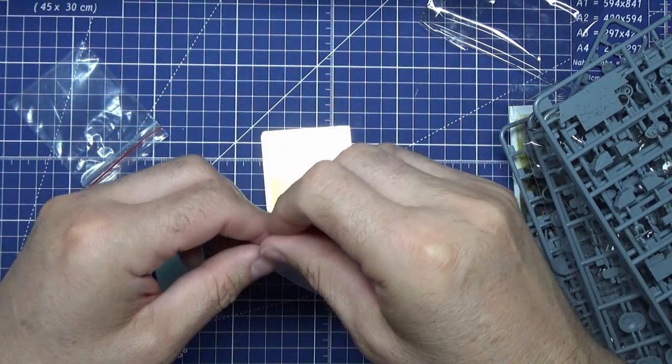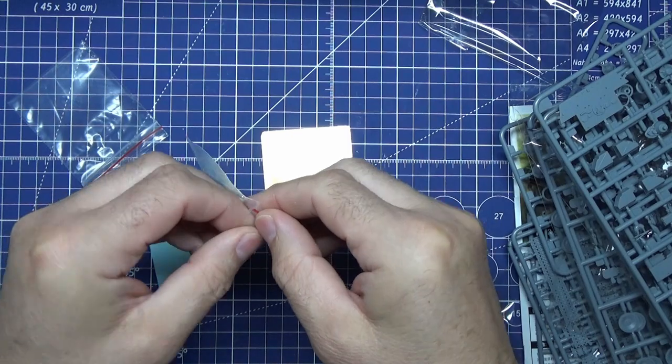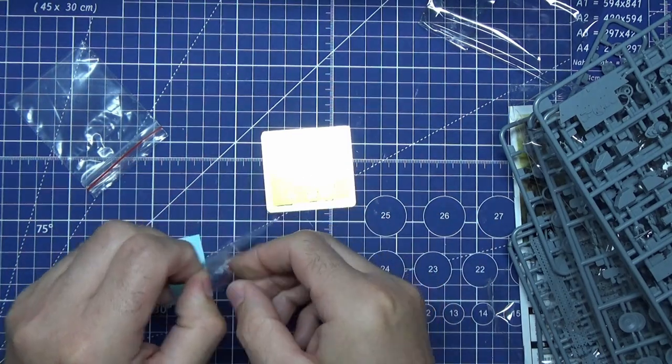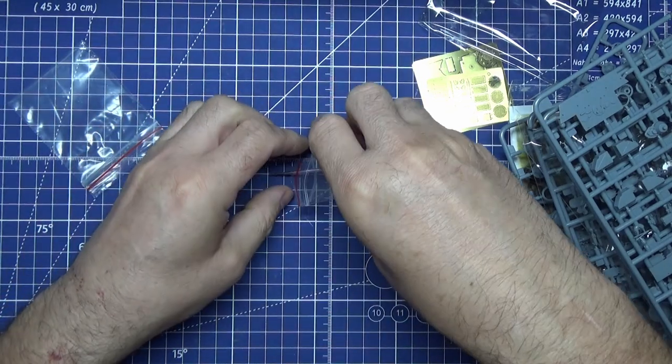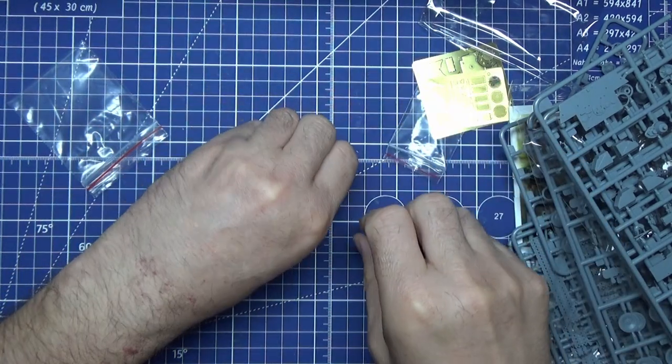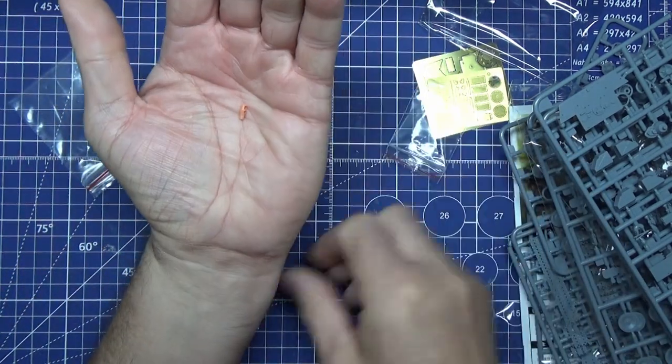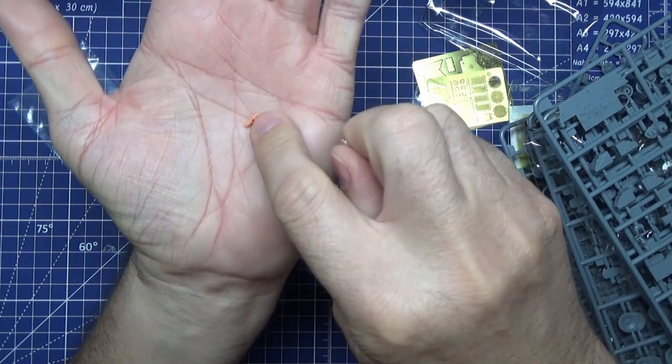We have got the tiniest bag in the world. Come on. One muzzle brake - I'll stop that before it rolls away - one muzzle brake there.